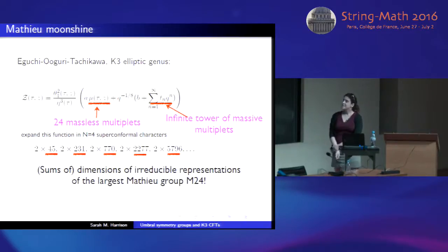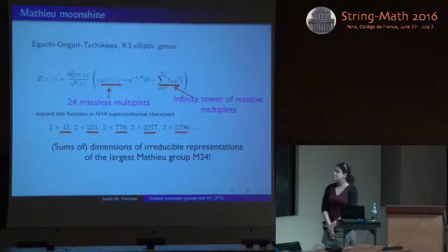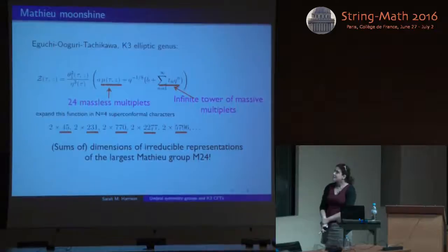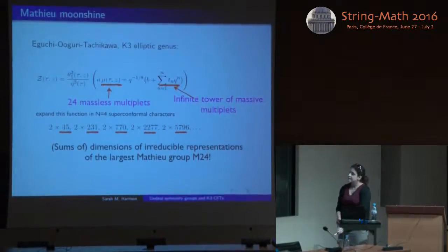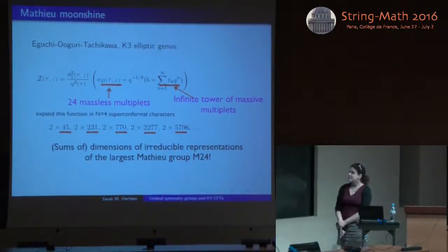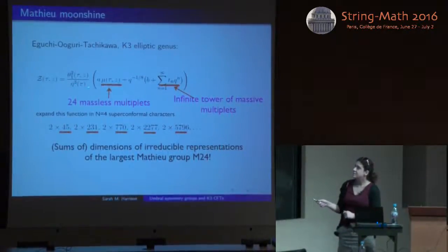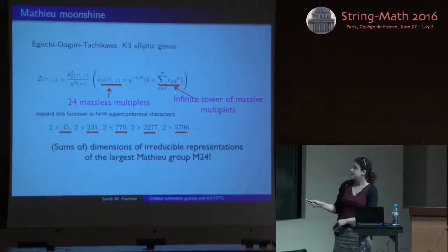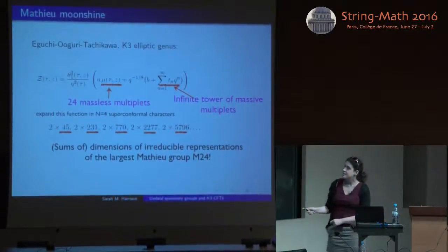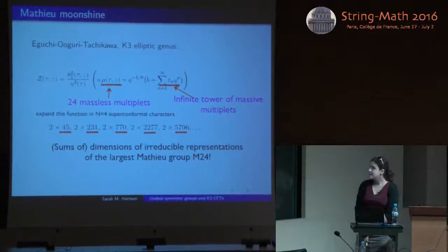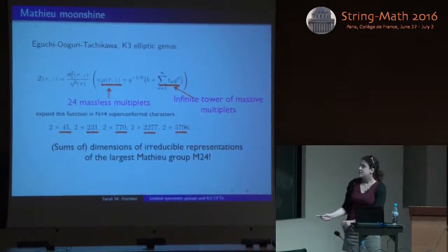The main observation motivating today's talk is from Eguchi, Ooguri, and Tachikawa, three physicists who in 2010 started what is now called Mathieu Moonshine. They were looking at the expansion of the elliptic genus of a K3 surface into characters of the N=4 superconformal algebra. They found a contribution from 24 massless multiplets and then an infinite tower of massive multiplets. The coefficients of these massive states are very interesting positive integers, which they noticed were related to sums of dimensions of irreducible representations of the sporadic finite simple group called the largest Mathieu group, M24.